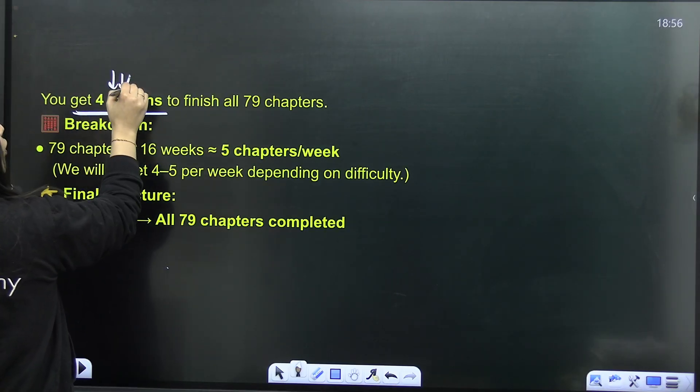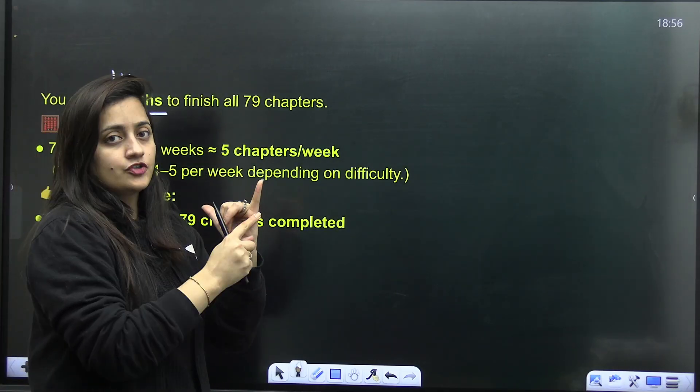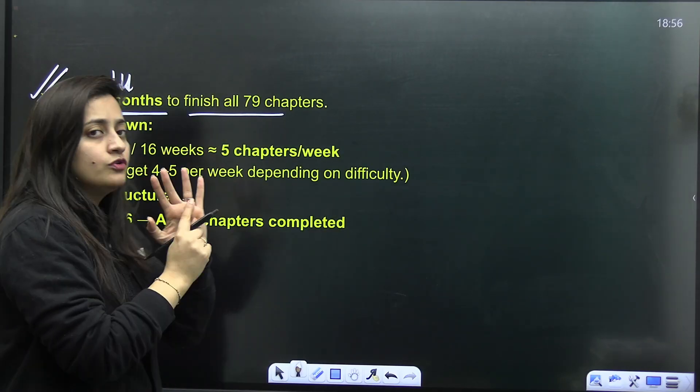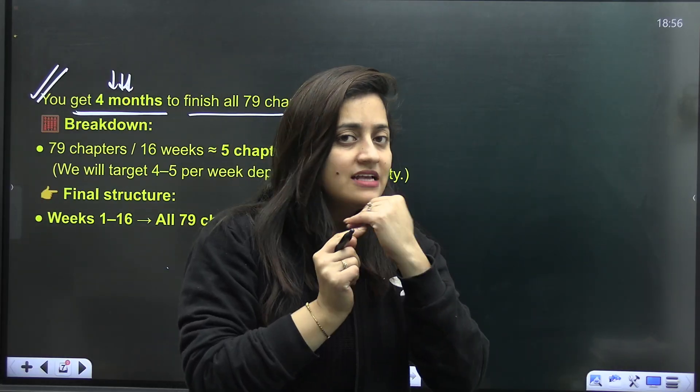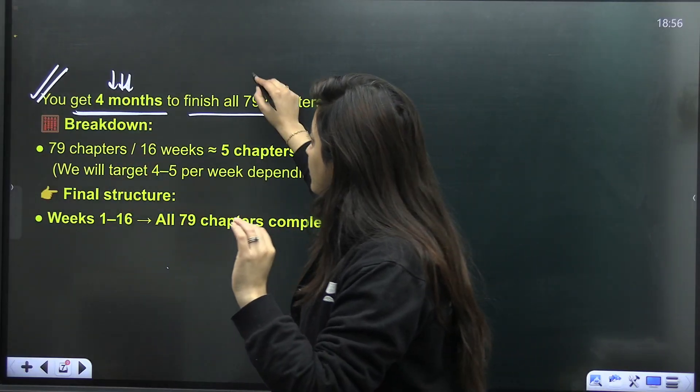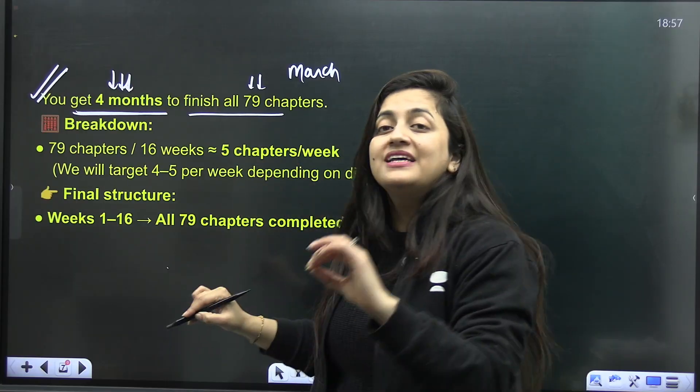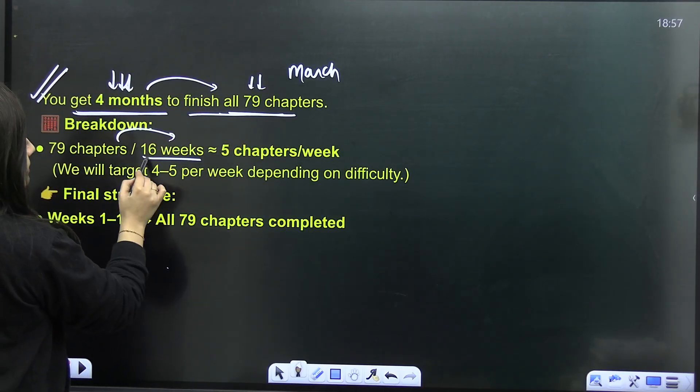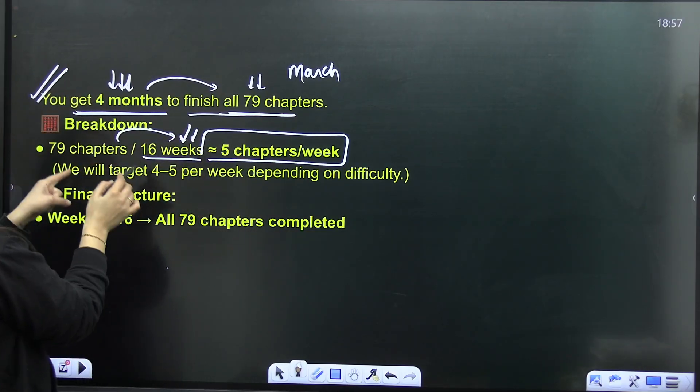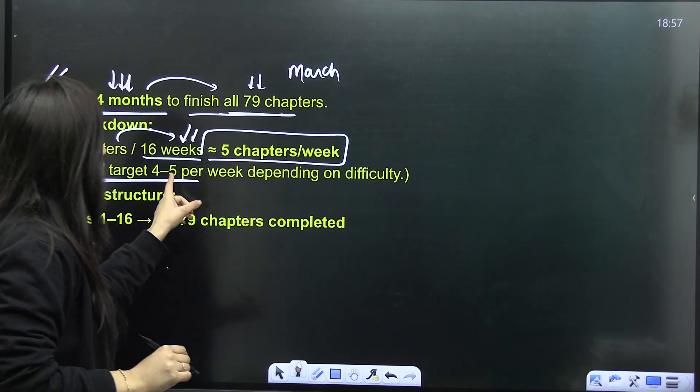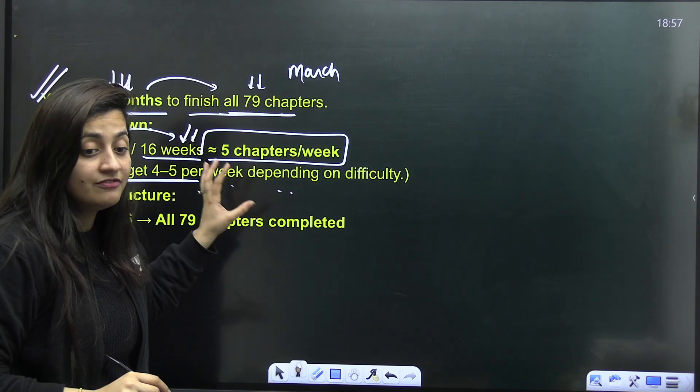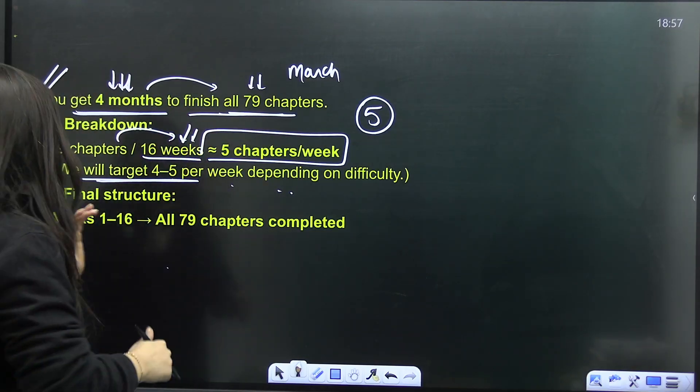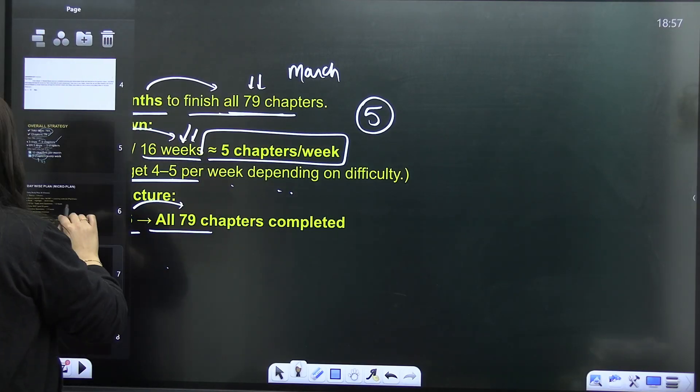So basically, you have four months, four months to finish this, December, January, February, March, to complete this, because one month, obviously, we have to keep it for the revision. So if that is the case, if you want to utilize April for the new topic completion, then you know the plan. And if you want to complete it by March only, which you should, because April should be for the revision, then you people can see four months we have for 79 chapters. So 16 weeks we have. So five chapters per week overall, you guys can see. So target is right now four to five chapters per week, four to five chapters. And I'll say go for the five chapters, try to go for it, pick up the easy ones initially. Okay, so week one to 16, you will be able to complete all the 79 chapters.